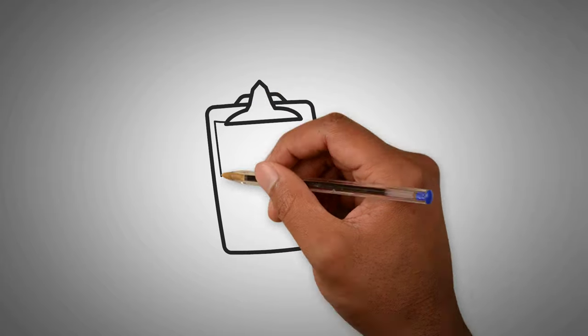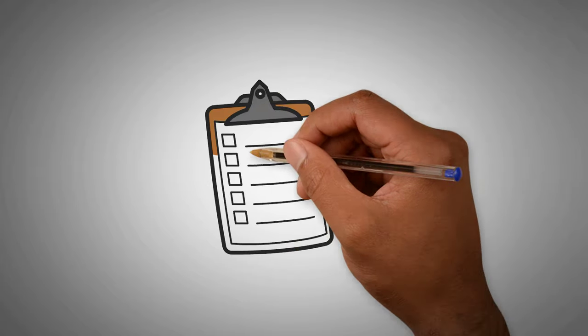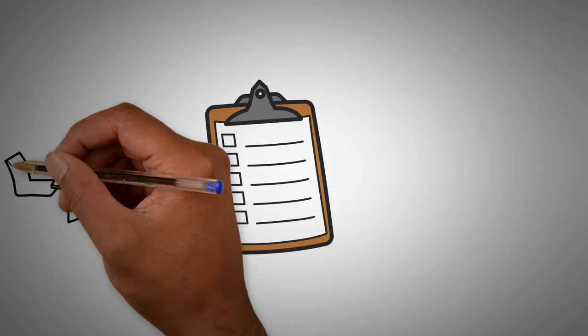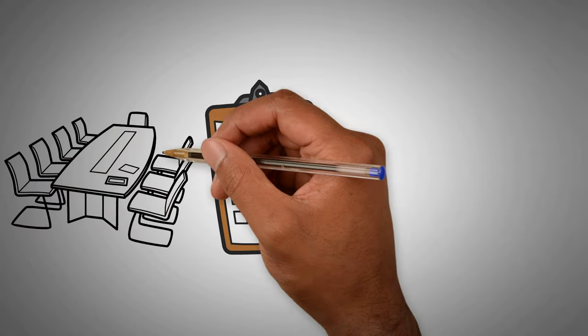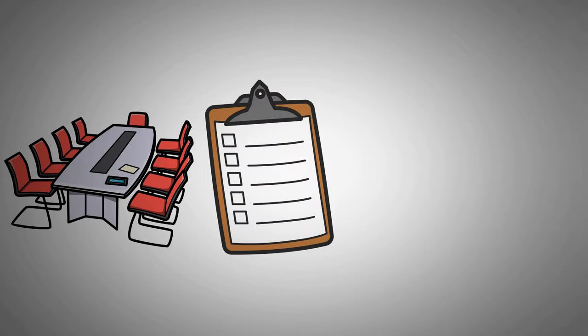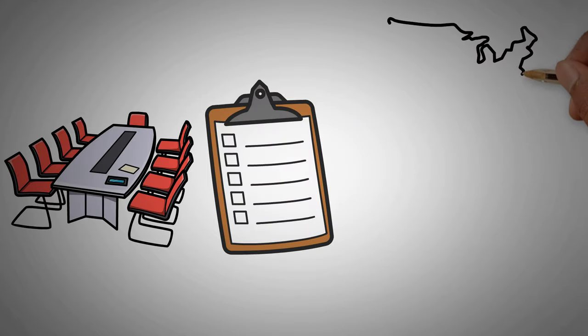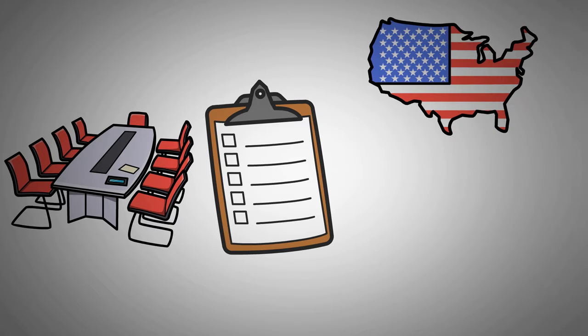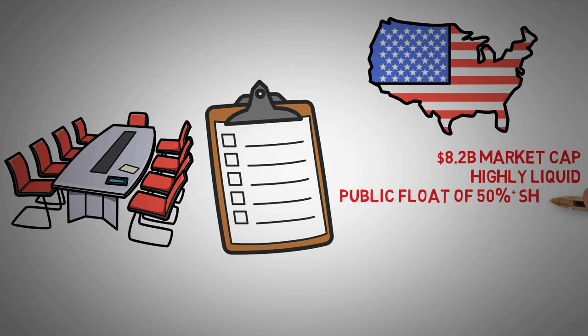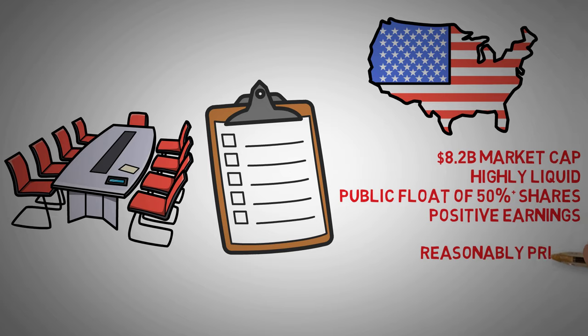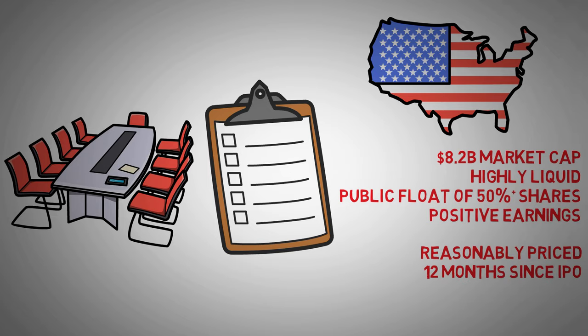One major advantage of this index is that each company must meet certain criteria to be included. Basically, before adding a stock to the S&P 500, they're analyzed by the U.S. Index Committee to ensure they meet certain financial health measures. To be eligible for the S&P 500 index inclusion, a company should be a U.S. company, have a market capitalization of at least $8.2 billion, be highly liquid, have a public float of at least 50% of its shares outstanding, and its most recent quarter's earnings must be positive. Additionally, the stock must be trading at a reasonable price and have been publicly traded for at least 12 months.